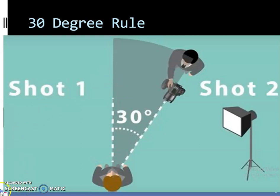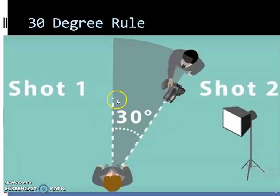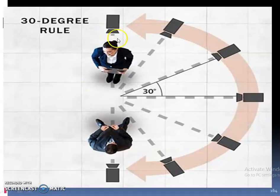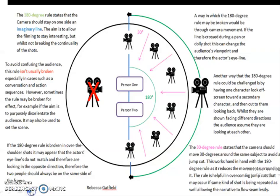When the camera angle changes between shots, the change must be more than 30 degrees. If you are planning to change the camera position, it should be more than 30 degrees. You can see the angle drawn here clearly — 30 degrees. The 30 degree rule states that the camera should move 30 degrees around the same subject to avoid a jump cut. This works hand in hand with the 180 degree rule, which we are going to study now.